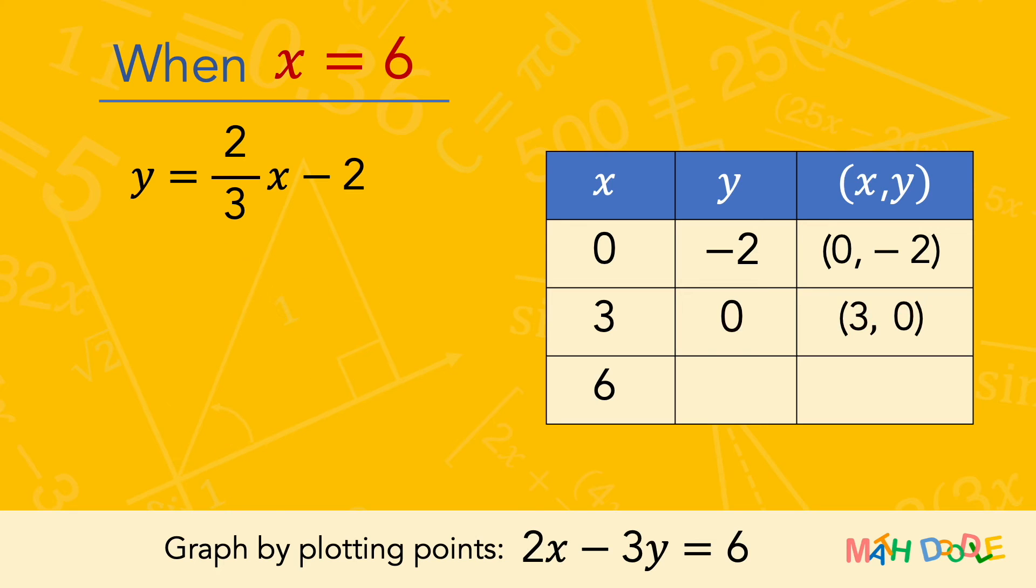Next, to find the value of y when x is 6, we are going to substitute 6 for x. 2 thirds times 6 is 4, and 4 minus 2 is 2. So, when x is 6, y is 2. This tells us that the line of the equation passes through the point 6, 2.